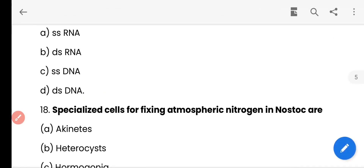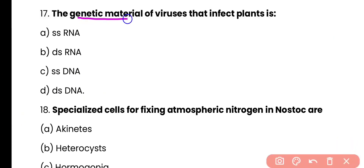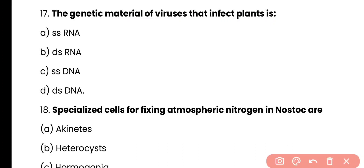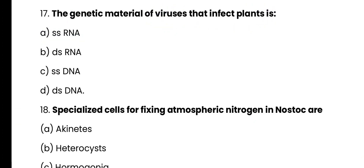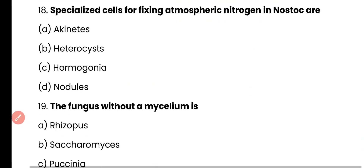Question number 17. The genetic material of viruses that infect plants is: single-stranded RNA, double-stranded RNA, single-stranded DNA, or double-stranded DNA? Correct answer is option A. The genetic material of most plant viruses is single-stranded RNA.